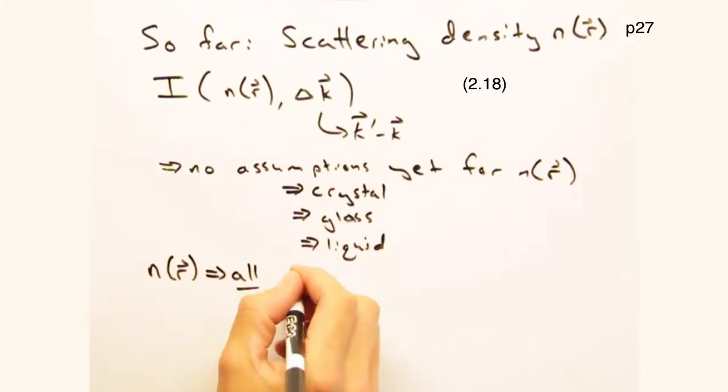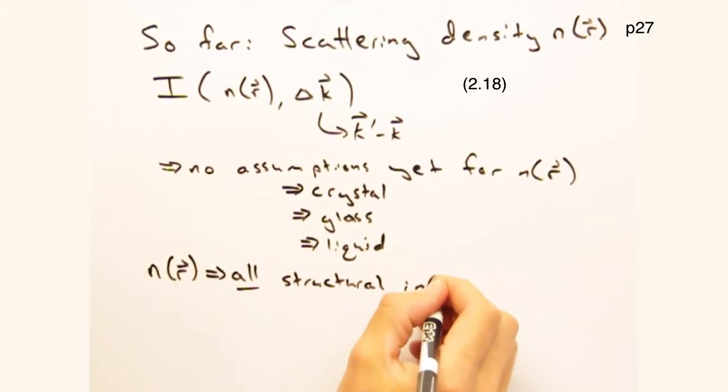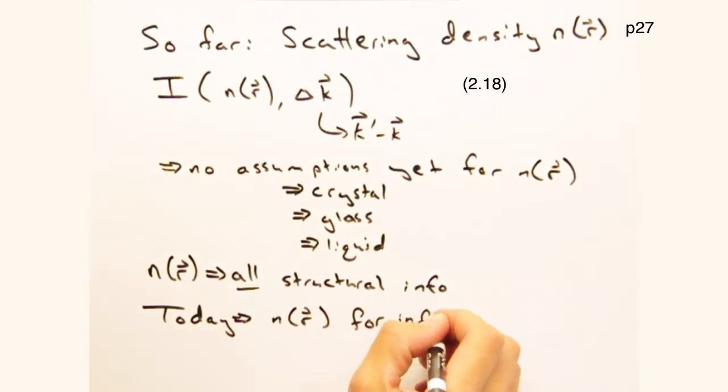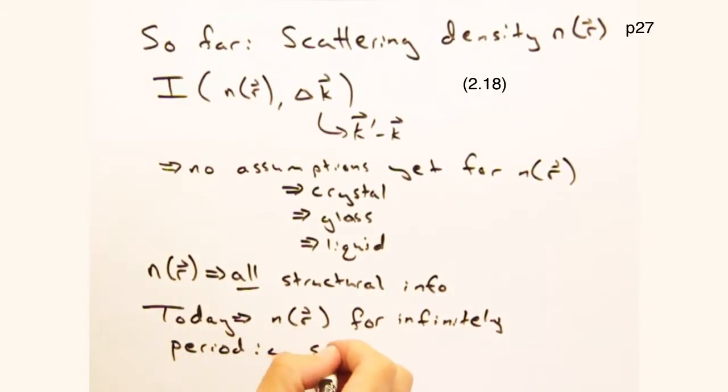But n of r is pretty important since it contains all the structural info of the material we're studying. Indeed, and so to that end, our goal is to build up an expression for n of r for an infinitely periodic solid. From there, we'll use translational symmetry to place constraints on this expression, so by the end of the video, we should have a well-defined n of r.